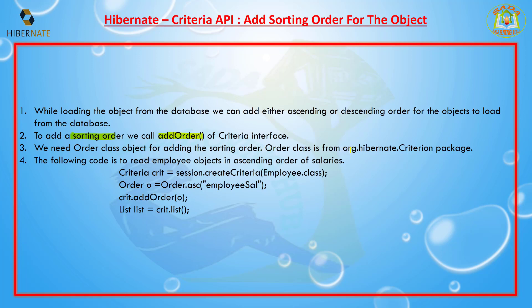The Order class is from the org.hibernate.criterion package. To add an order to your criteria, you need to pass an Order object. Based on that Order object, Hibernate will order your rows accordingly.